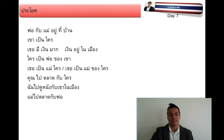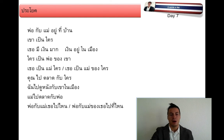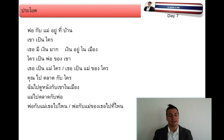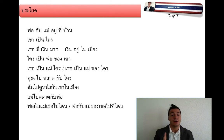แม่ไปตลาดกับพ่อ — Mother goes to the market with father. พ่อกับแม่เธอไปไหน, or พ่อกับแม่ของเธอไปที่ไหน — both sentences have the same meaning. The second version is a bit more specific about the words implied in the first sentence.